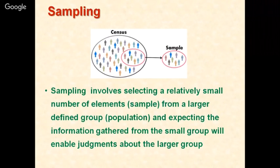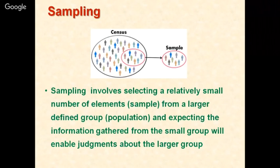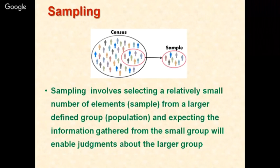Sampling involves selecting a relatively small number of elements from a large, defined group. First, you define the target group — for example, all technical teachers teaching in engineering colleges and polytechnics, irrespective of gender, qualification, or stream. From that population, we draw a small sample because we are not able to collect information from each and every member, expecting that information gathered from the small group will enable judgments about the larger group.